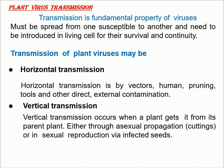Now let us see the transmission of plant viruses. Transmission is the fundamental property of viruses. Viruses must be spread from one susceptible host to another and need to be introduced into living cells for their survival and continuity. Transmission of plant viruses may be horizontal or vertical. Horizontal transmission is by vector, human, pruning, tools, and other direct external contamination. Vertical transmission occurs when a plant gets the virus from its parent plants, either through asexual propagation — that means cuttings — or through sexual reproduction via infected seeds.